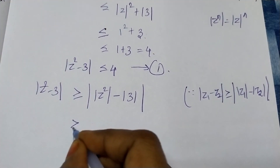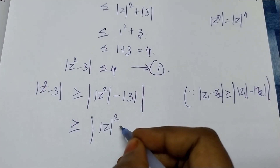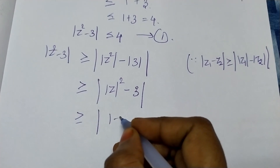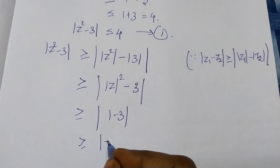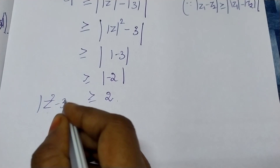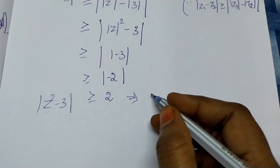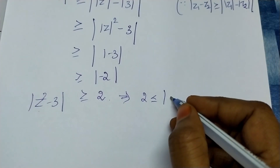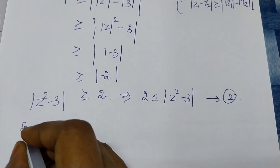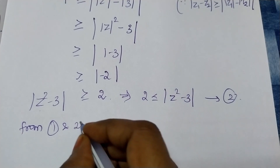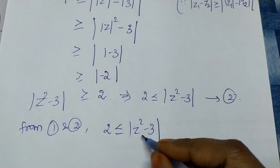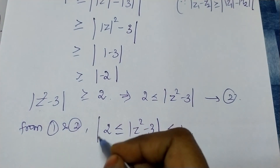Using the property z to the power n, mod z equals 1, so mod z squared equals 1. Therefore mod z squared minus 3 is greater than or equal to 1 minus 3, which equals negative 2. So mod z squared minus 3 is greater than or equal to 2. This is equation 2. From equations 1 and 2: 2 is less than or equal to mod z squared minus 3, which is less than or equal to 4.